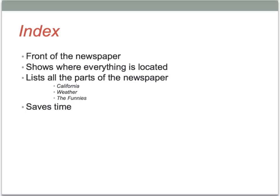One of the things you need to have is an index. It is located at the front of the newspaper and shows where everything is located. It lists all the parts of the newspaper — for example, California or local news, weather, the funnies, which for you young people are the comics. This saves people time so they don't have to search through the entire newspaper. Those of you that don't know where this is in a book, it's usually called a table of contents, and that's kind of what you're doing for your newspaper.